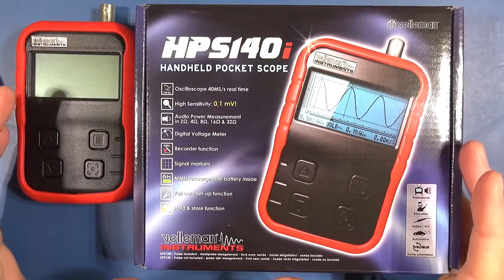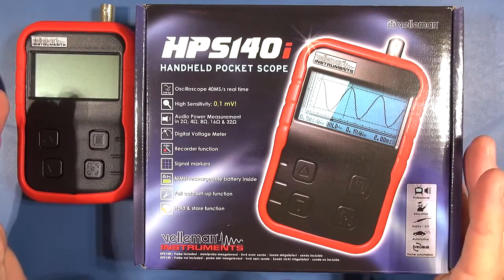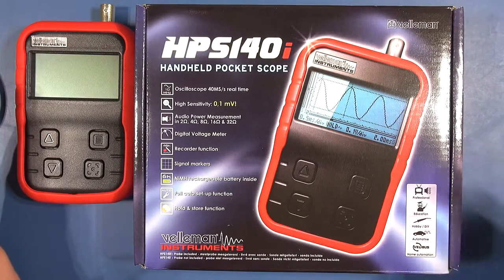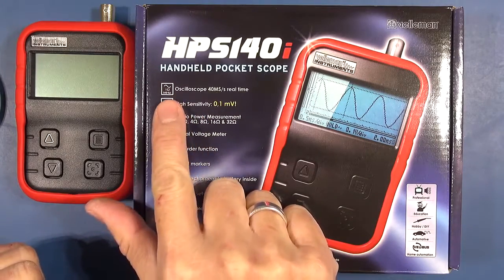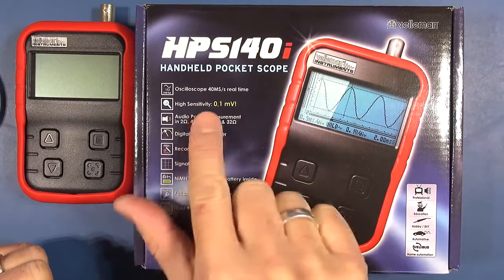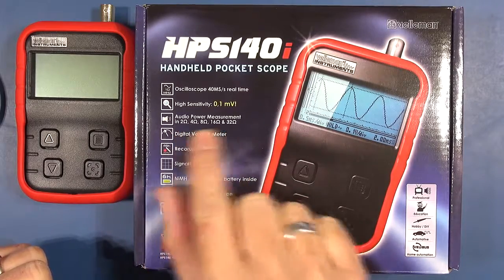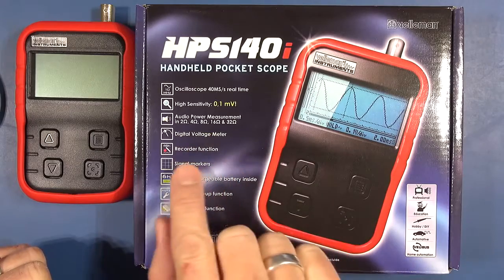Right, so a quick bit of information on it. At this point in time February 2014 you can find these for about $120 on Amazon. I will have them in my Amazon store. I'll have a link below. On the box it states it's a 10 megahertz oscilloscope, 40 mega samples per second real time. High sensitivity 0.1 millivolt. It apparently does do audio power measurements and it gives the impedance or resistance levels there.